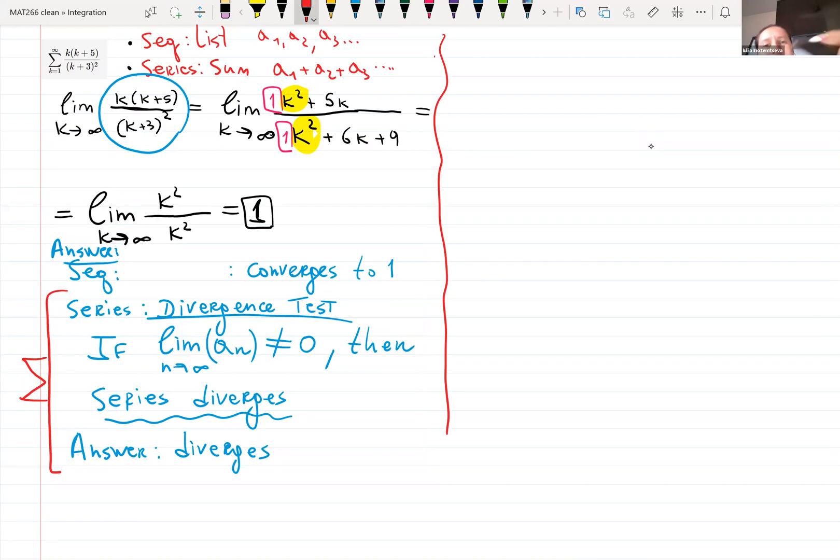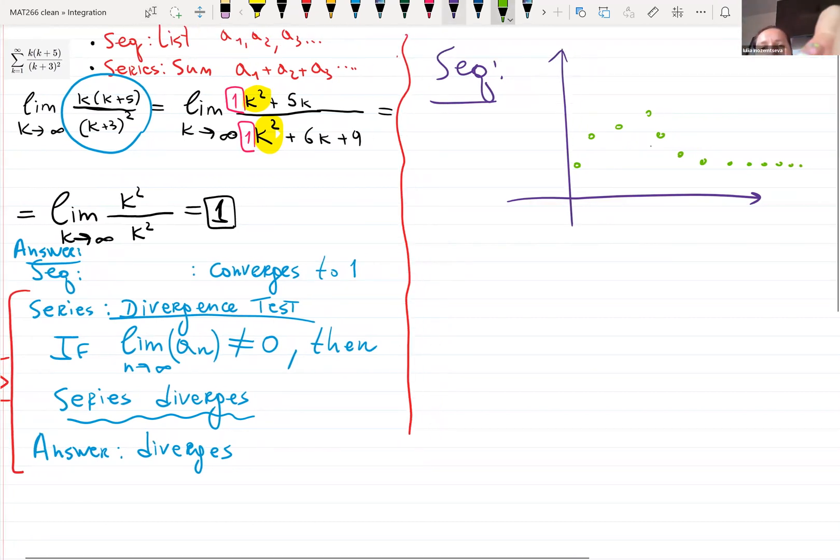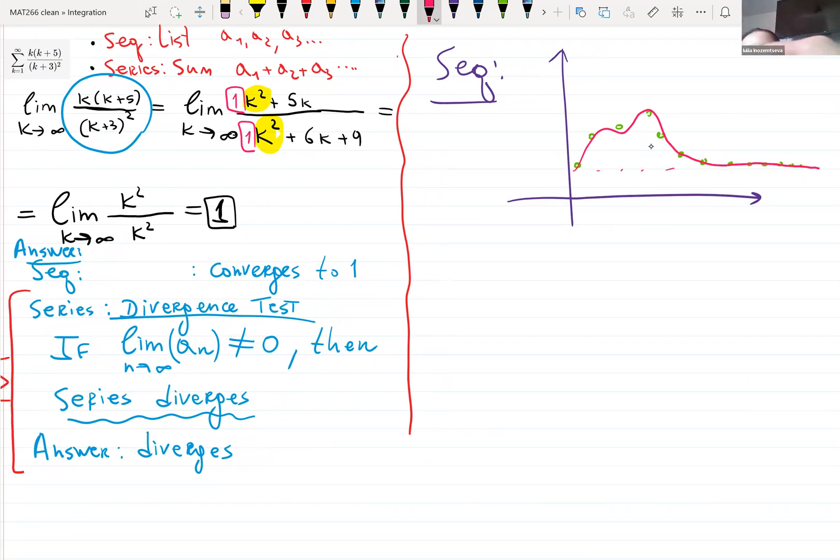Visually, it looks like so for sequence. For sequence, we have a list of data. So it starts here and here and here. And then it's stuck at one, like so. So we say, oh yeah, if the limit gives you one, that means no matter how they were jumping before, now it shrinks to level one. And we say sequence, indeed, the sequence is just list of data converges to one. So that's just dots, the dots.